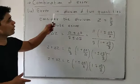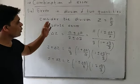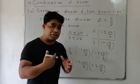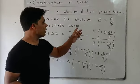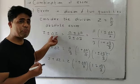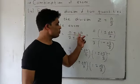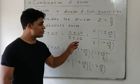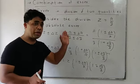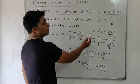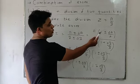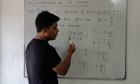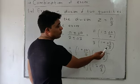Fourth case: error in division of two physical quantities. Consider z equals a divided by b. Writing with absolute error: z plus-minus delta z equals (a plus-minus delta a) divided by (b plus-minus delta b). Taking a common from the numerator gives a times (1 plus-minus delta a by a). Taking b common from the denominator gives b times (1 plus-minus delta b by b).